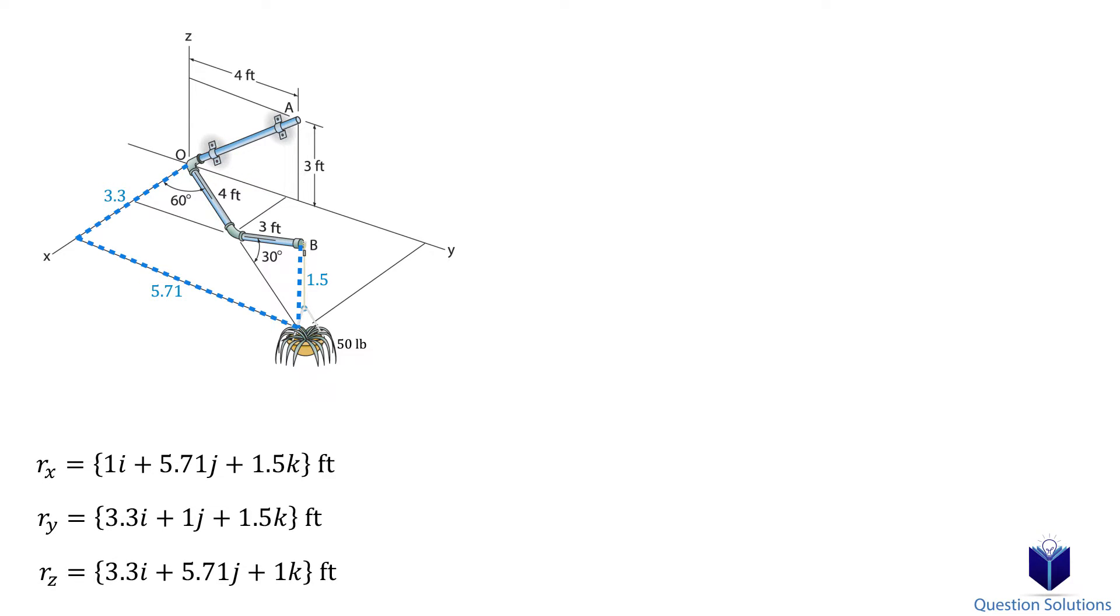We now need to express the weight of the flower pot as a force in Cartesian form. Since the weight is a force downwards in the z-axis, we can simply express it as negative 50k.